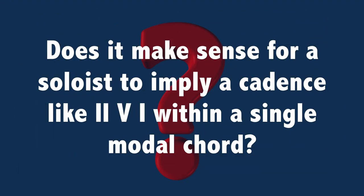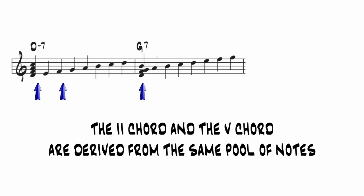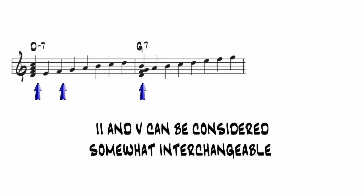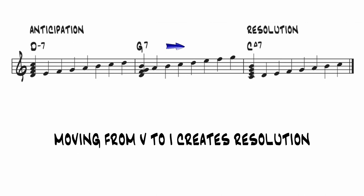Does it make sense for a soloist to imply a cadence like 2-5-1 within a single modal chord? In these videos and others, I've talked about the fact that the 2-chord and the 5-chord can be considered somewhat interchangeable by the improviser — they're both derived from the same pool of notes and share two chord tones. A 2-5 on its own doesn't really create a sense of resolution, but when you go from the 5-chord to the 1-chord, you do create resolution. The absence of dominant resolution is a key difference within modal harmony. You might say that improvising on modal chords is like existing in a state of suspended animation, so implying a cadence like 5-to-1 might make less sense.